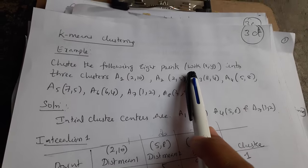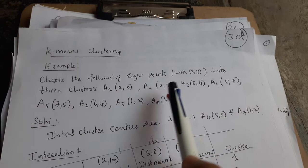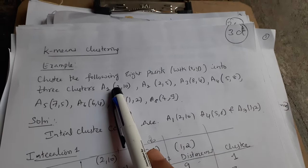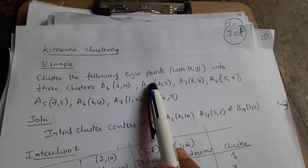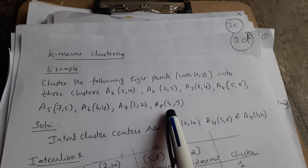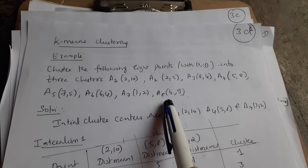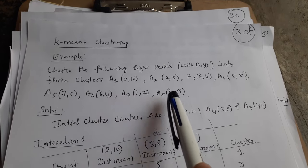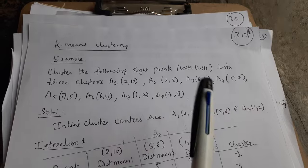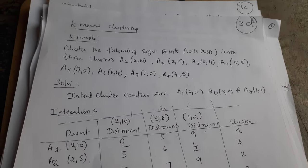We need to cluster the following eight data points, which have X and Y values, into three clusters. We are given eight data points from A1 to A8. All these data points A1 to A8 should be grouped into three groups based upon similarity.